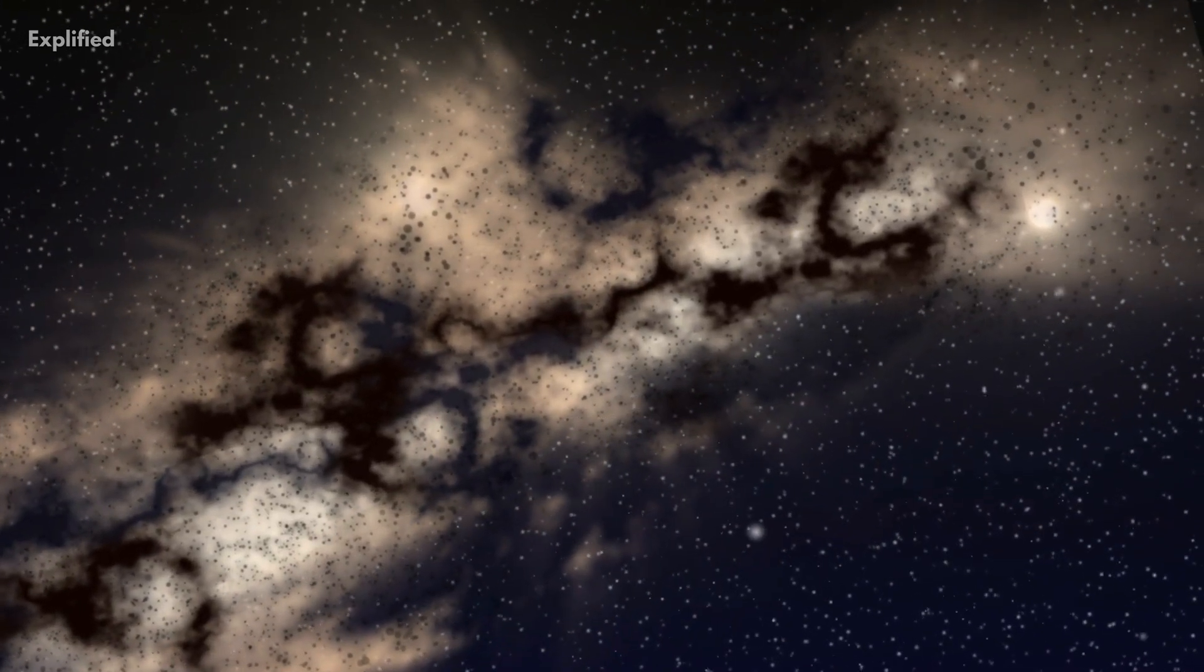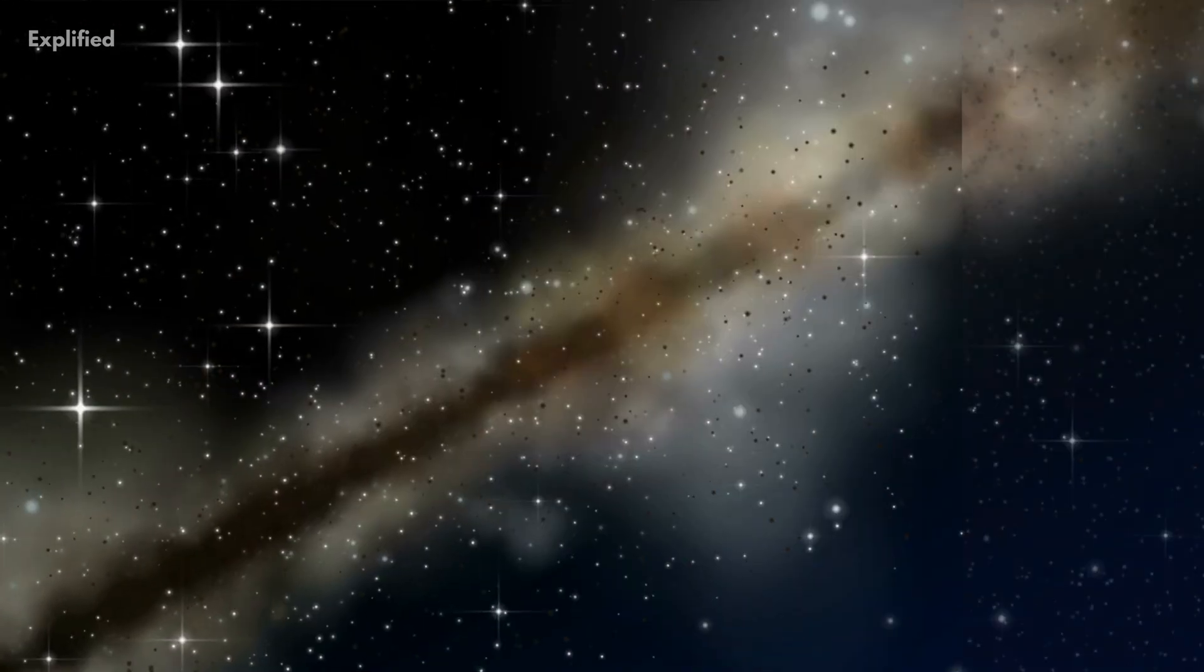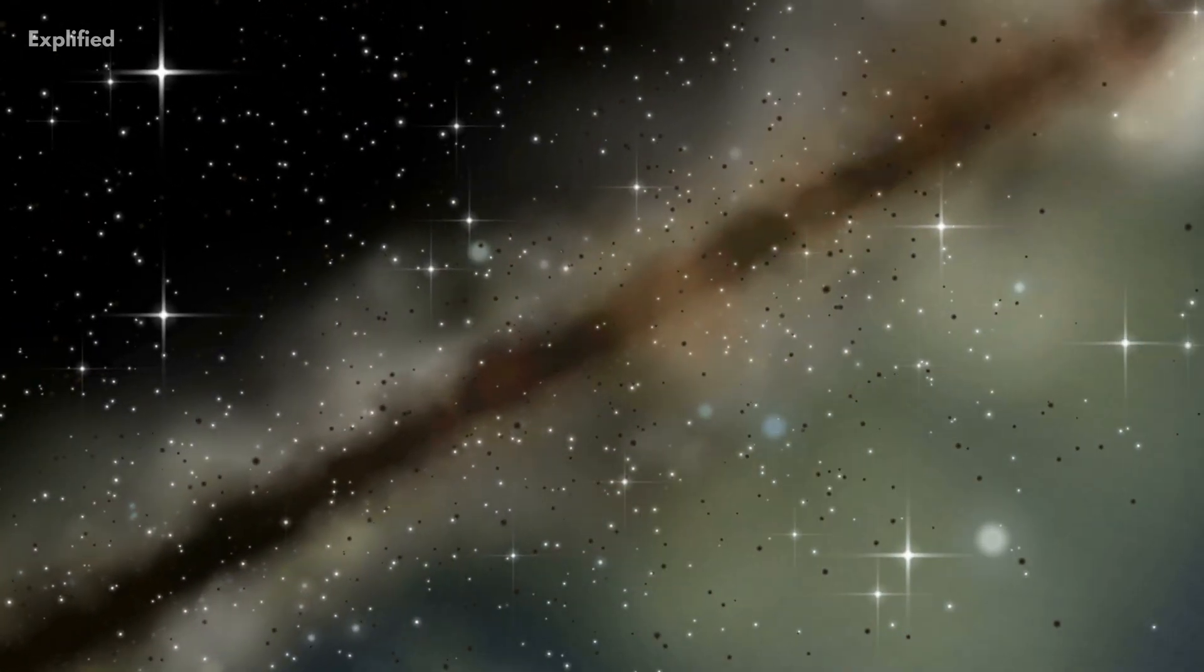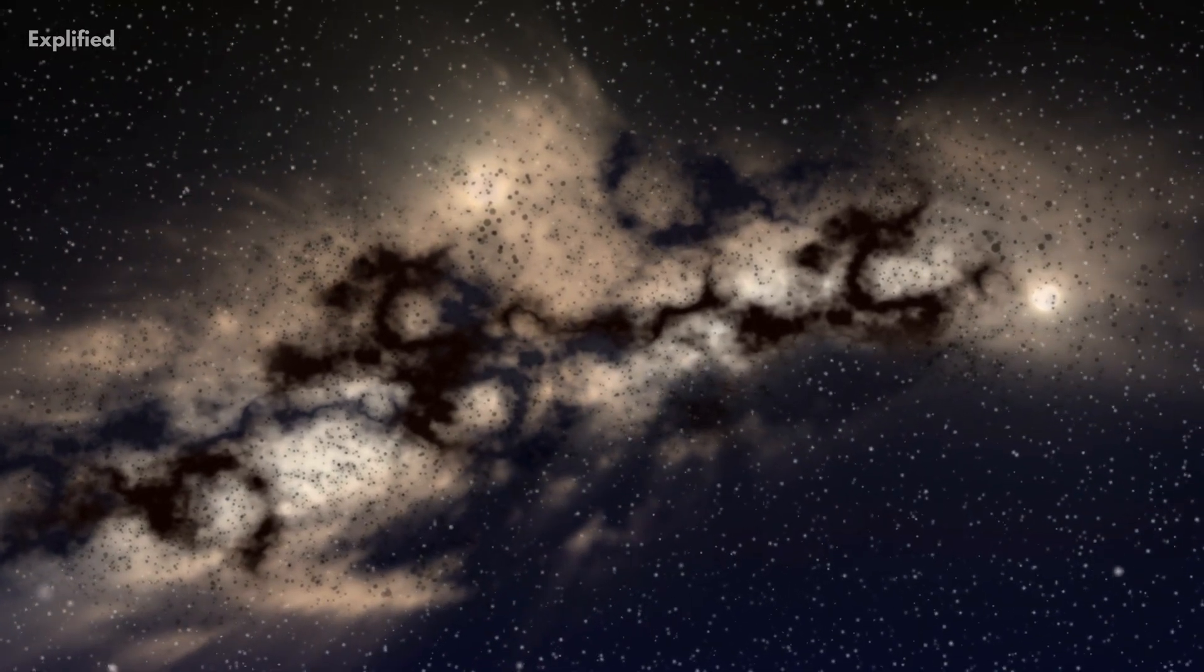The particles in the interstellar medium start to clump together because gases contain mass. The process will inevitably continue on because a large mass creates a greater gravitational field. A certain critical point between the pressure of gases and the nebula's gravity is crossed at some unspecified moment in time, and the nebula starts to collapse due to its own gravity.